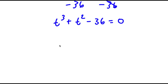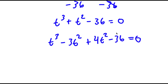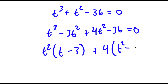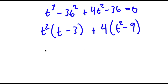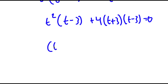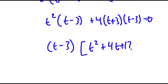Now that we have that value, we can find the rest. I'm going to rewrite this as t to the power of 3 minus 3t squared plus 4t squared minus 36 is equal to 0. Factoring out t squared from t to the power of 3 minus 3t squared, I get t squared times t minus 3, plus 4 times t squared minus 9. This is the same thing as t squared times t minus 3, plus 4 times t plus 3 times t minus 3, is equal to 0.